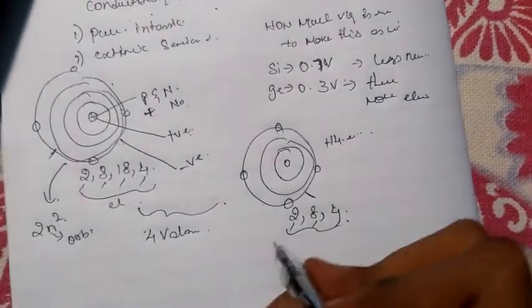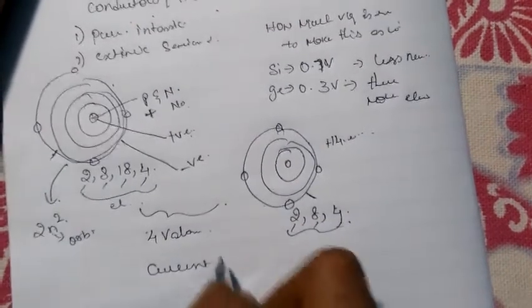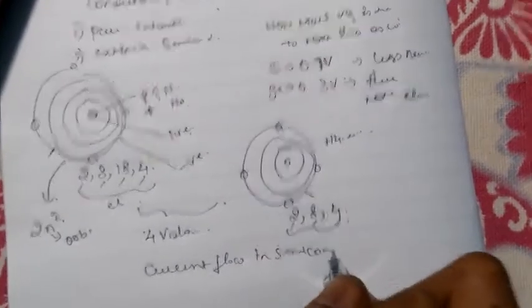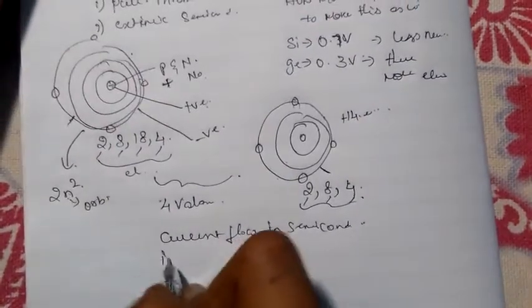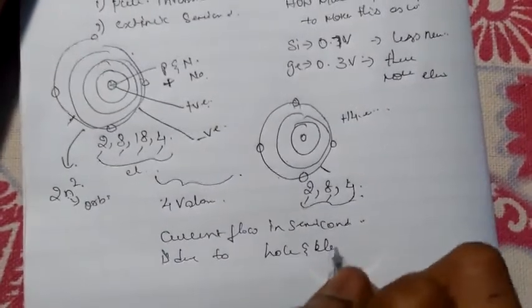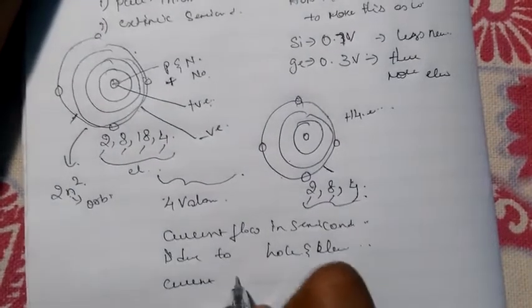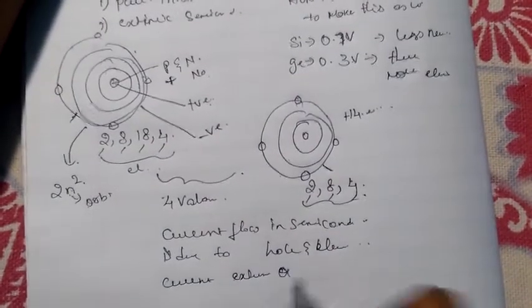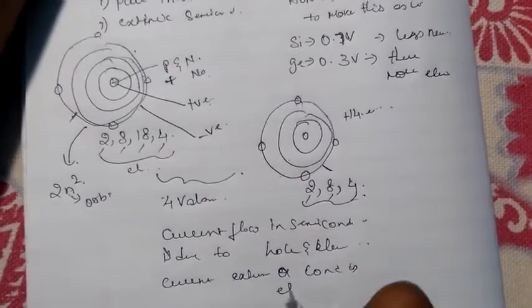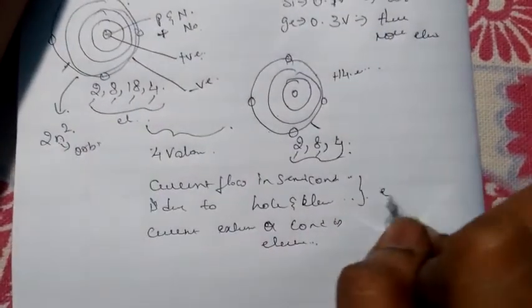Current flow in a semiconductor is due to both holes and electrons. The current flow in an external circuit or conductor is due to electrons only.